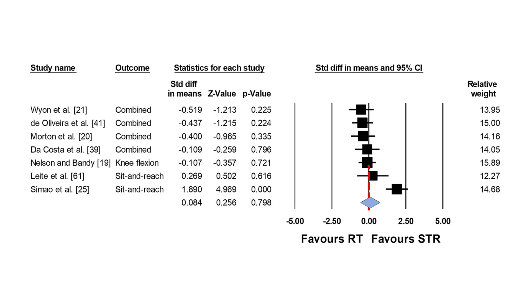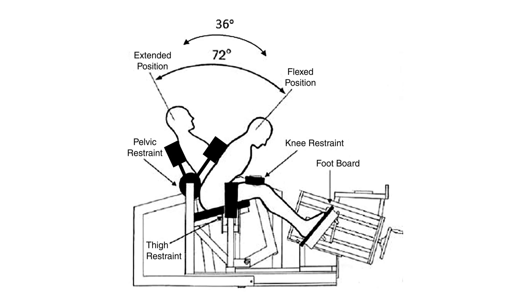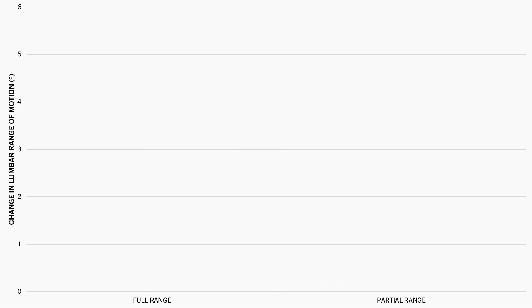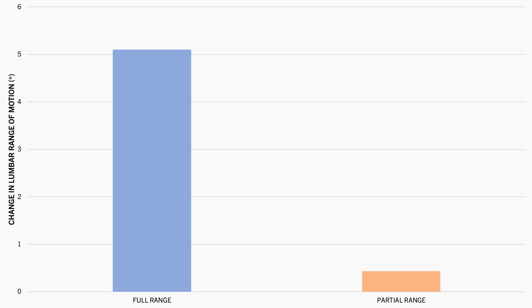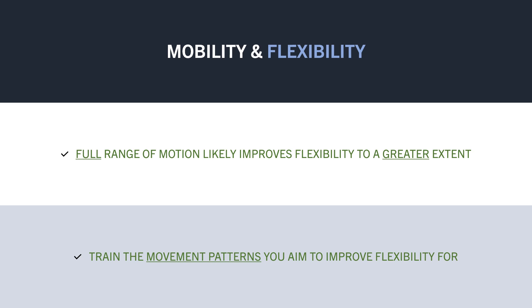However, how does the range of motion we train with influence the degree of flexibility we achieve? The only study I could find directly comparing the effects of range of motion on flexibility changes found that 24 adults with chronic lower back pain performed back extensions in a specialized machine through either a full or partial range of motion. After 12 weeks, total lumbar range of motion improved to a greater extent in the group training with full range of motion. So although evidence is limited, we would probably expect to see greater improvements in flexibility and mobility by training with a larger range of motion, and we would want to lift through the specific movement patterns and joint positions that we are trying to improve flexibility of.